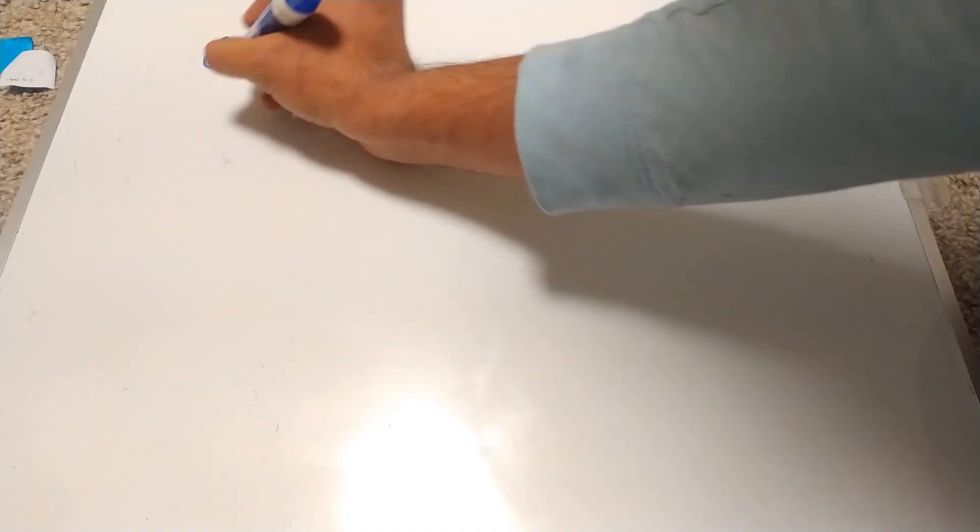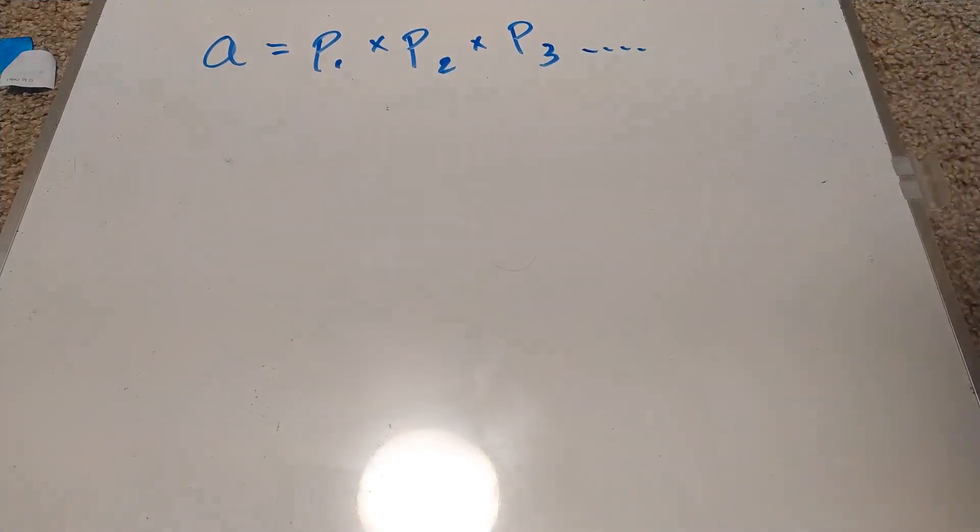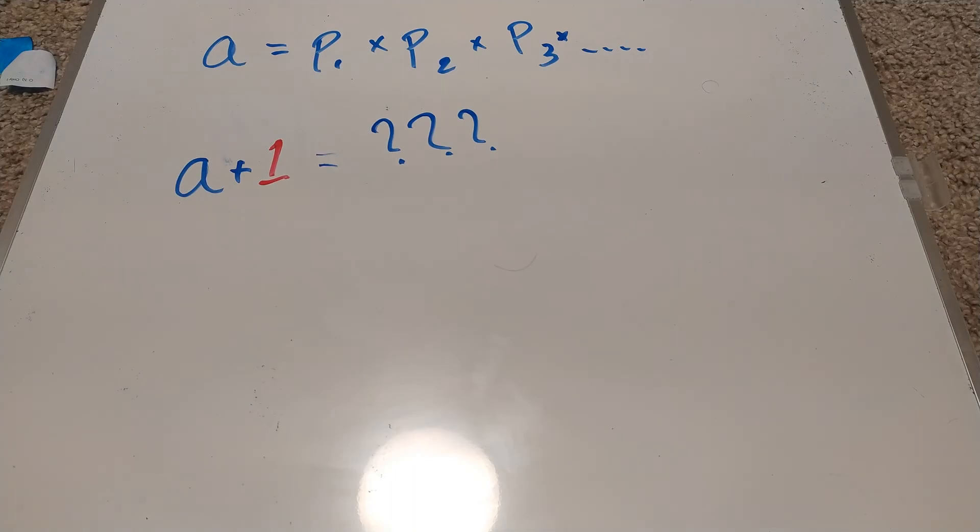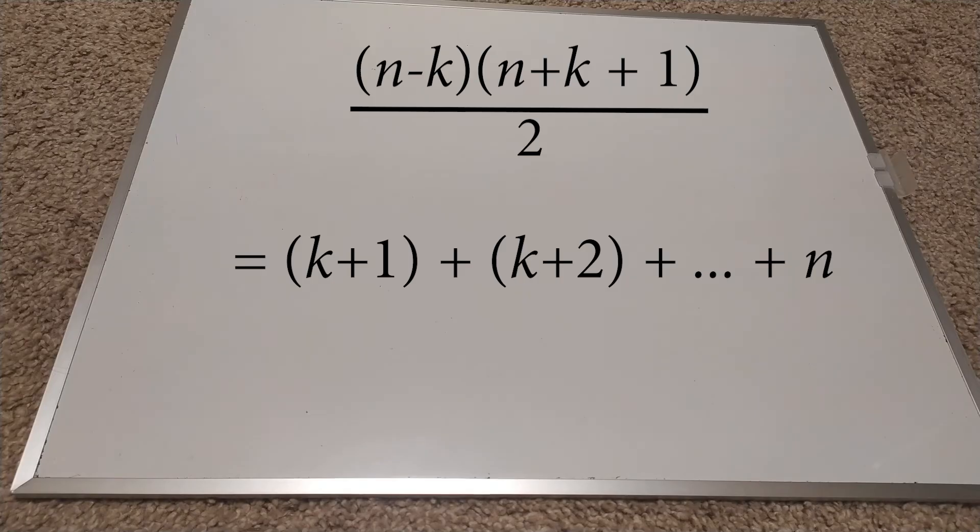The really nice thing about this class of numbers is that it relates sums to factors. What happens to the factorization of number when we add numbers together is basically an open problem. In this very special case of adding consecutive numbers, the relationship with factors is quite clear, which I find kind of sweet.